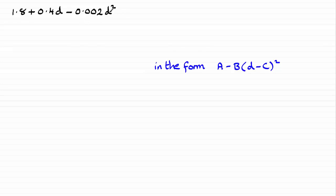Now because this term here, the d-squared term is negative, it's a good idea to pull out minus 0.02 as a common factor first of all. So if we do that, what you're going to get is this line here.